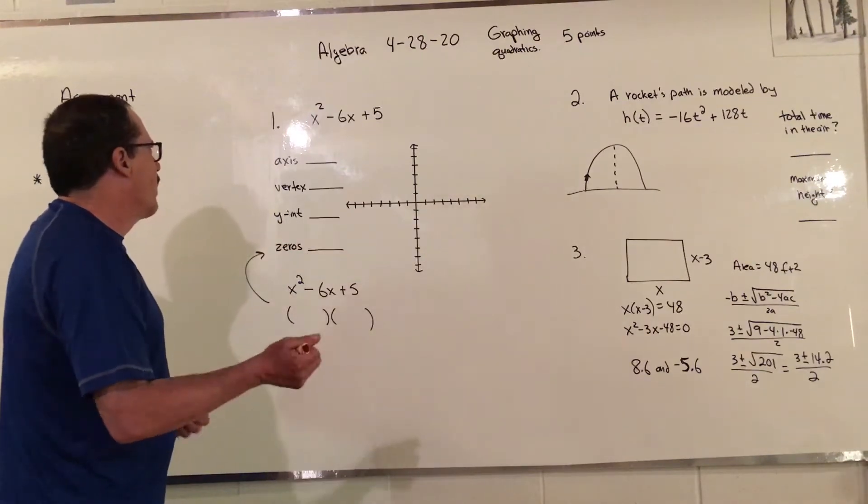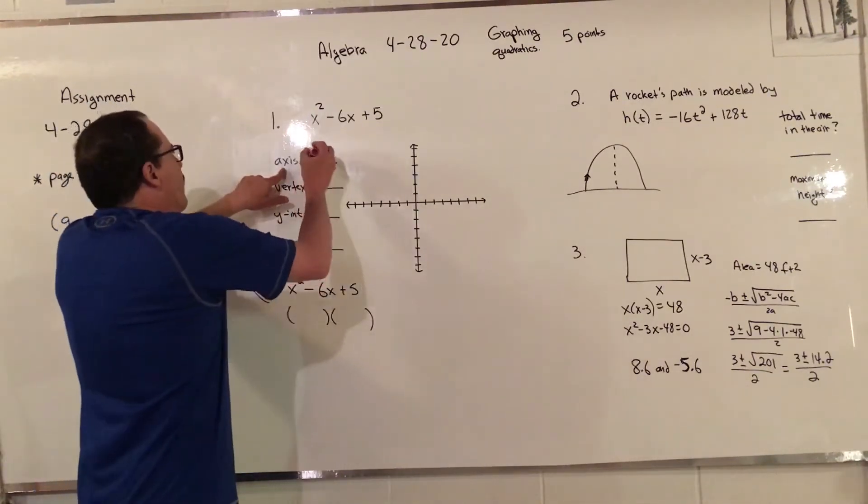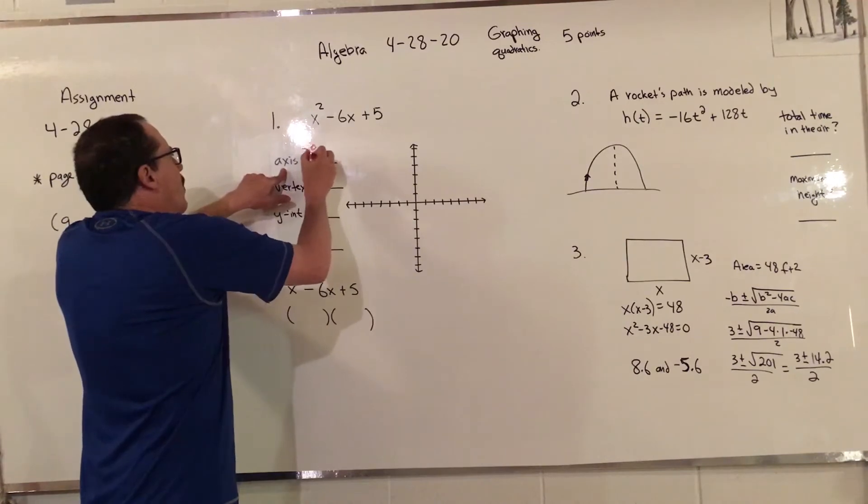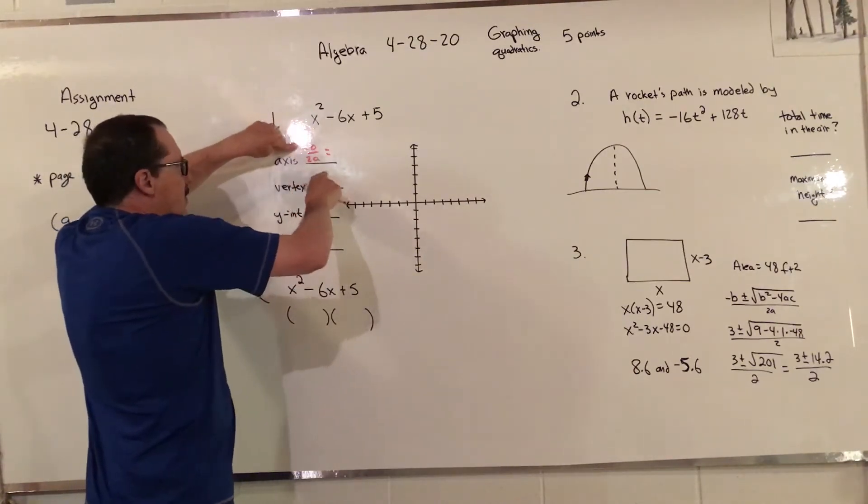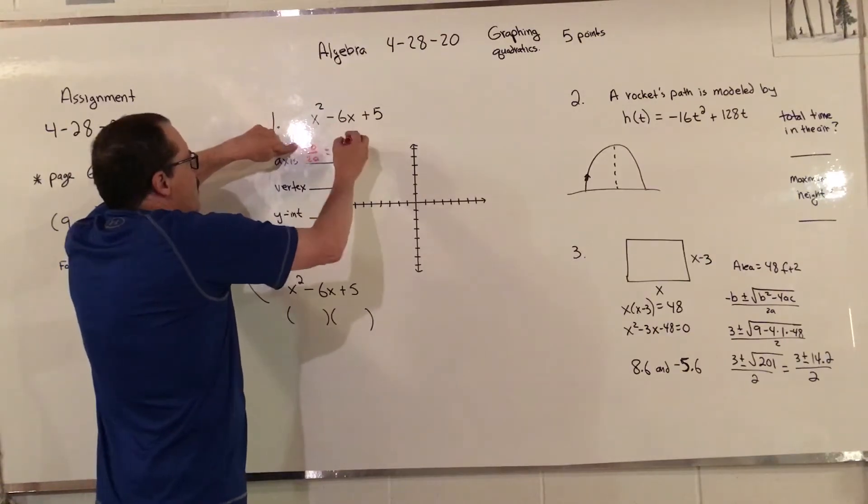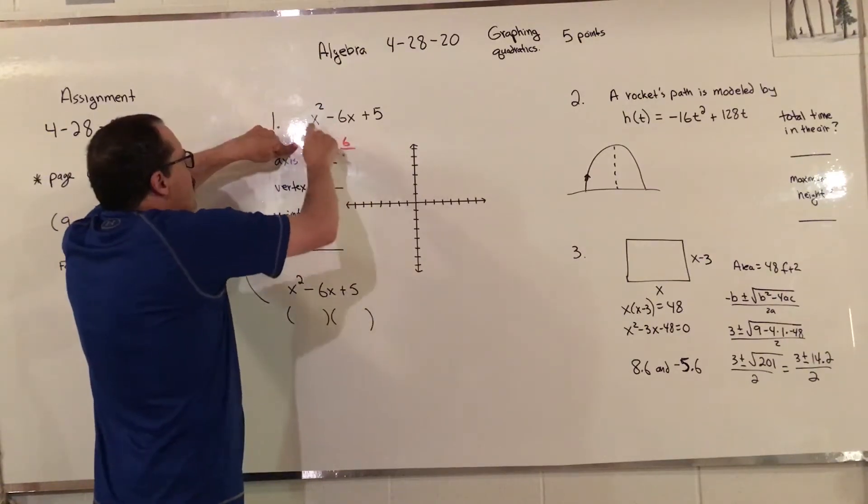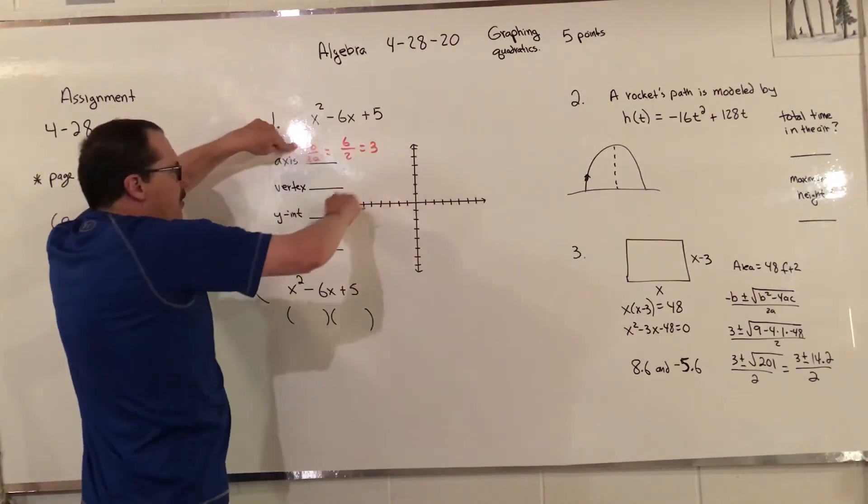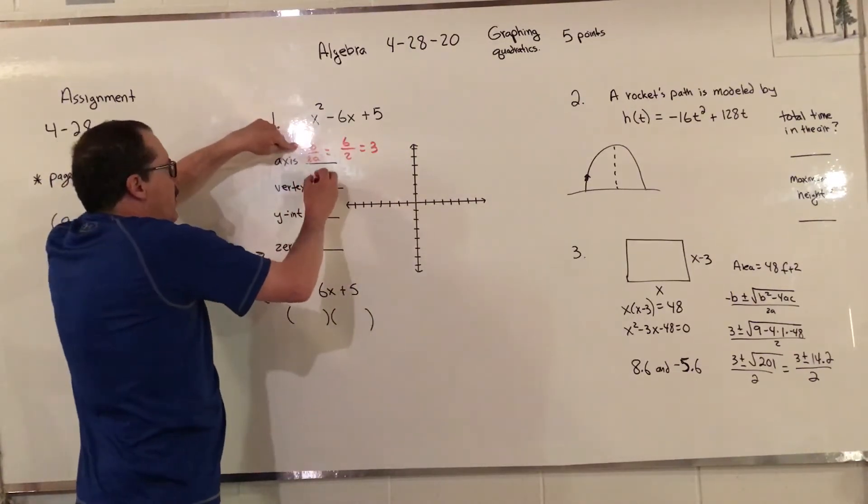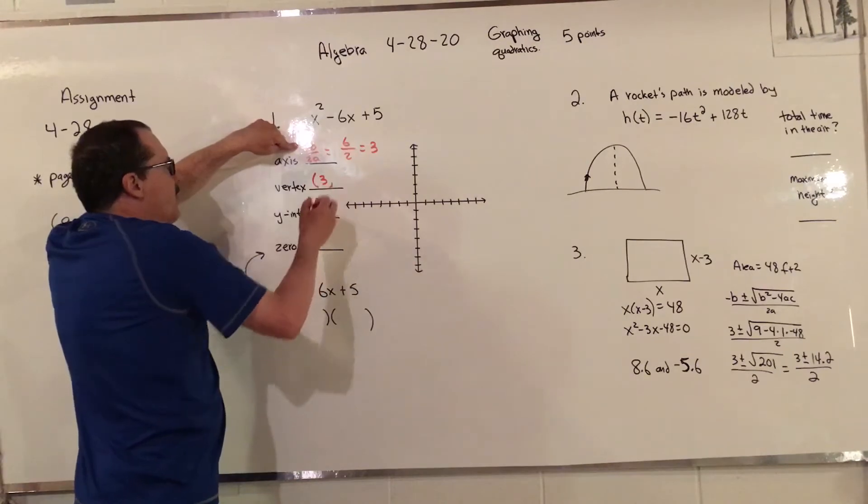To find the axis, remember it's negative b over 2a. I always write that down otherwise I'll forget something. So negative and negative 6 is positive 6, 2 times 1 is 2, so I get 3. Very common for people to get negative 3 there and then everything goes wrong, so positive 3 is the first number.